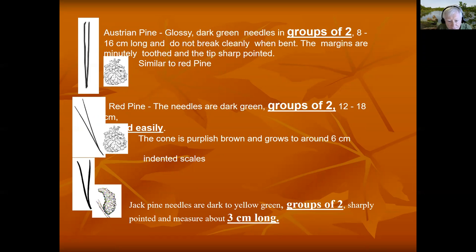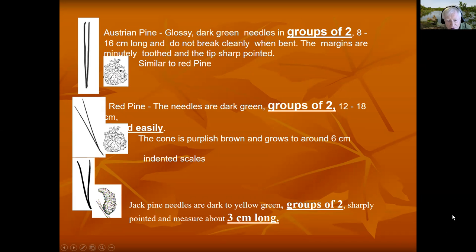Jack pine has needles in groups of two. Often the needles create a V shape, often quite wider than this. The cone often has the shape of a J.